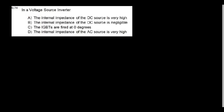In a voltage source inverter, related to the driving of an induction motor, the internal impedance of the DC source is negligible. If it is a current source inverter, the internal impedance is very high — infinite. So for a voltage source inverter, negligible internal impedance is the right answer.